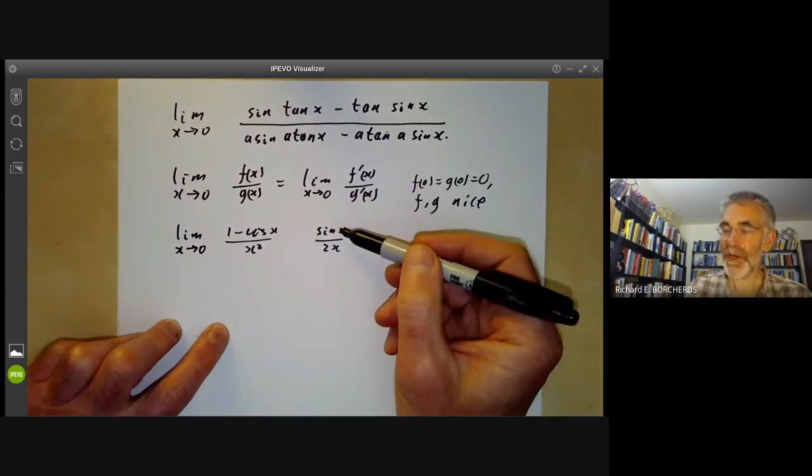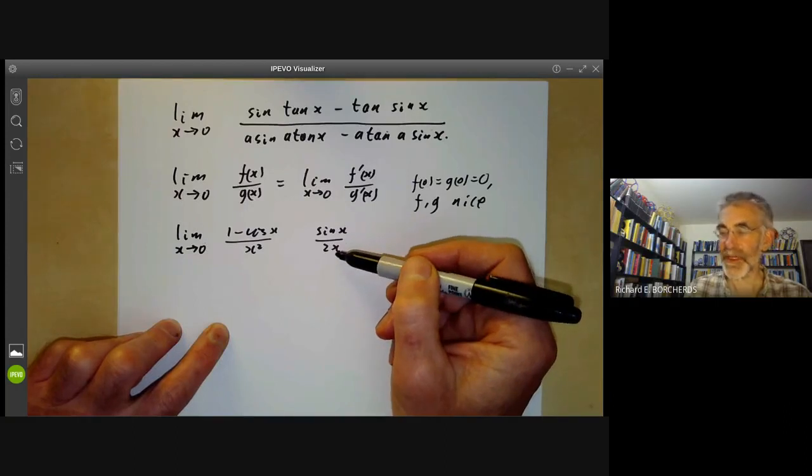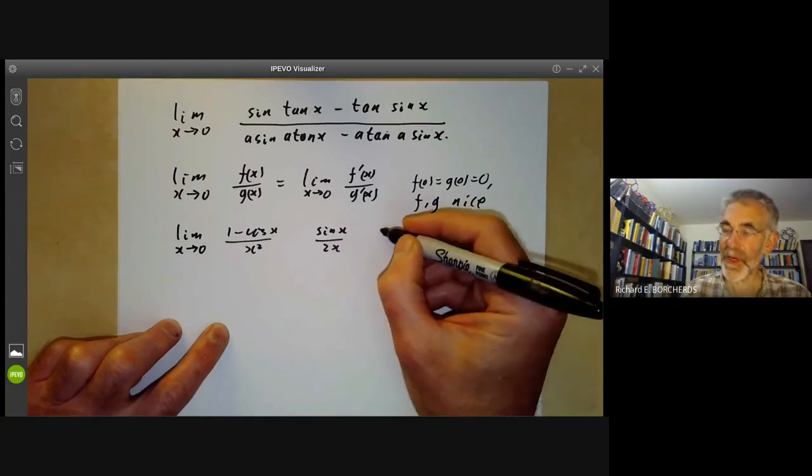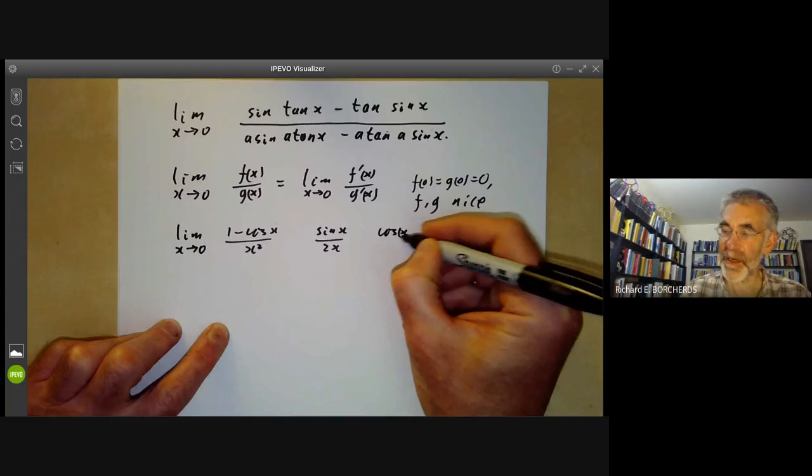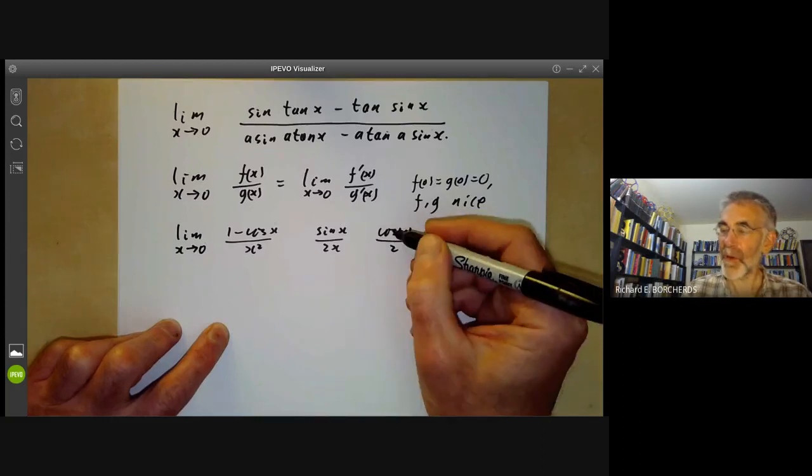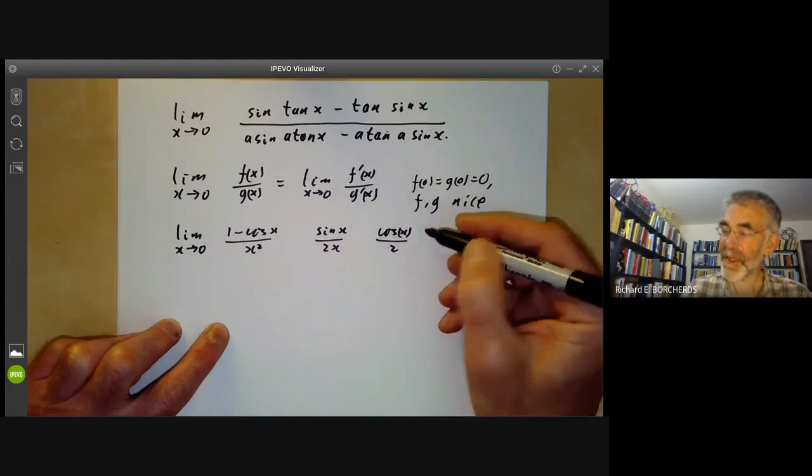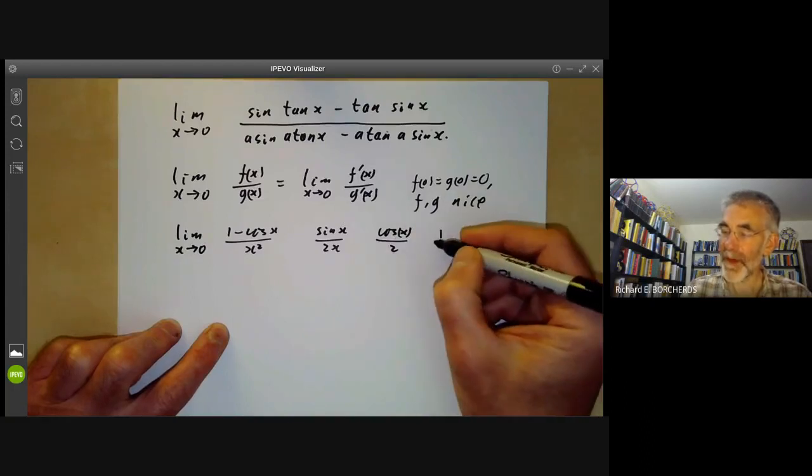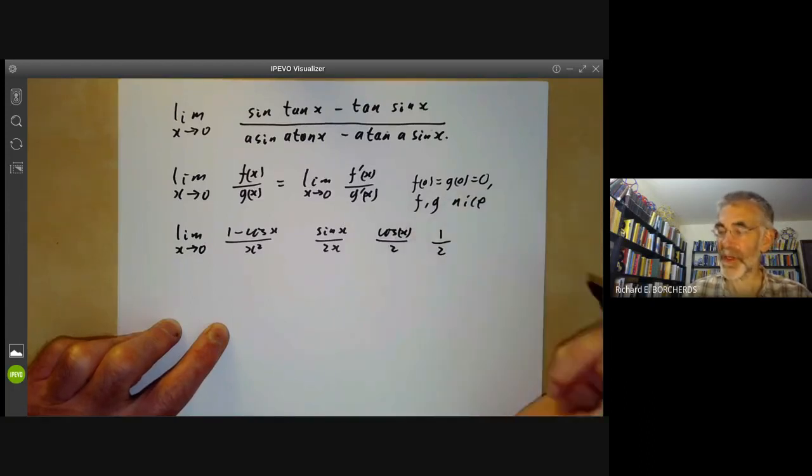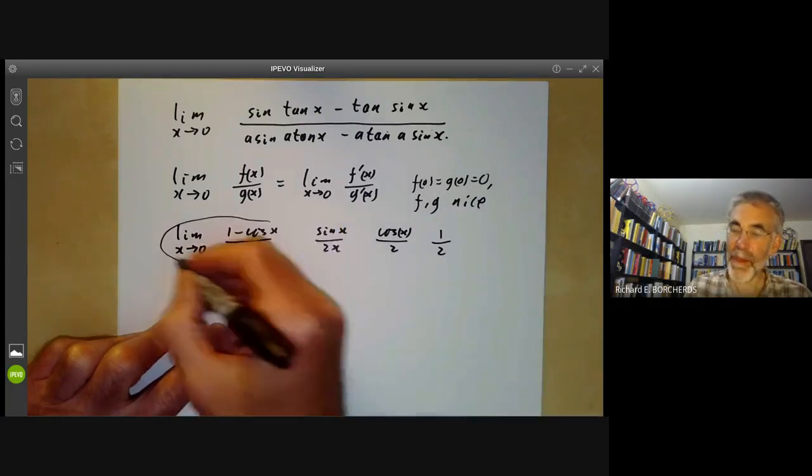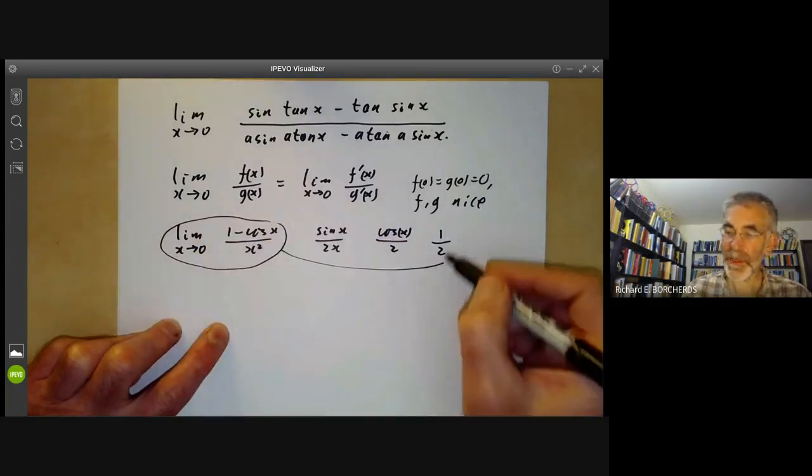Again, the numerator and denominator both vanish at x equals zero, so we differentiate them again and get cosine x over 2. This time they have non-zero limits. In fact, this is limit 1 and the denominator is limit 2. So this limit here is just equal to 1/2.